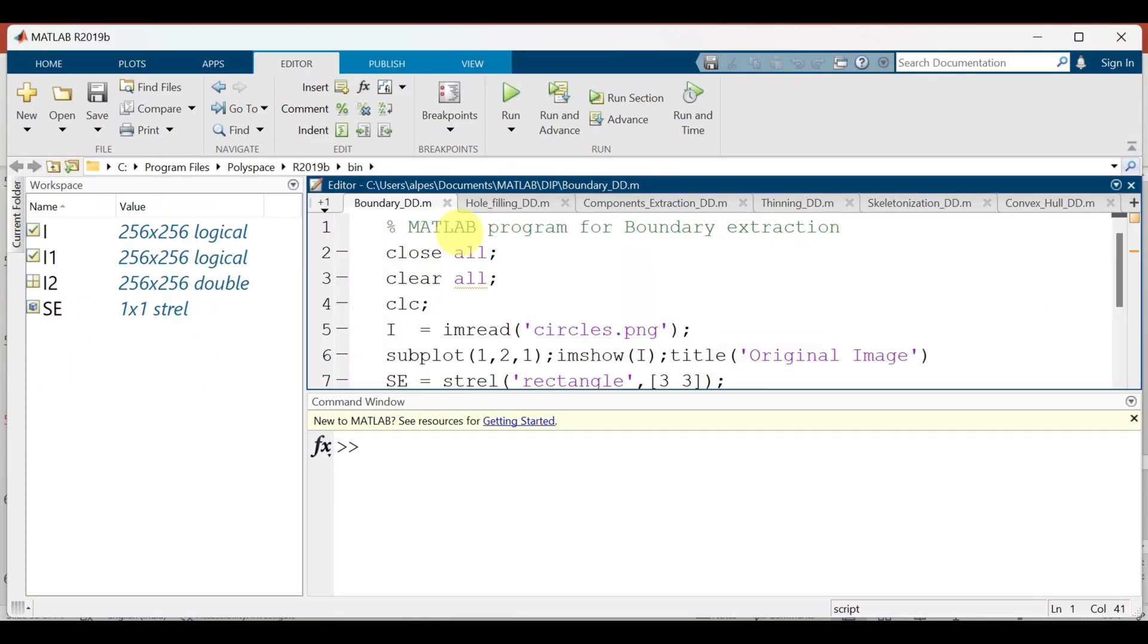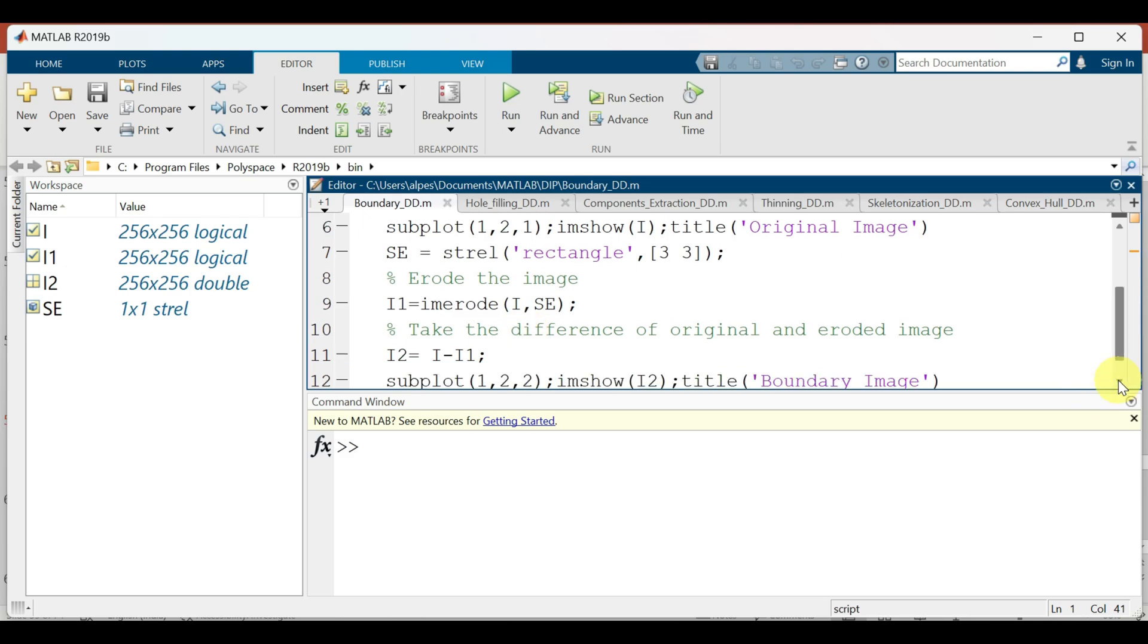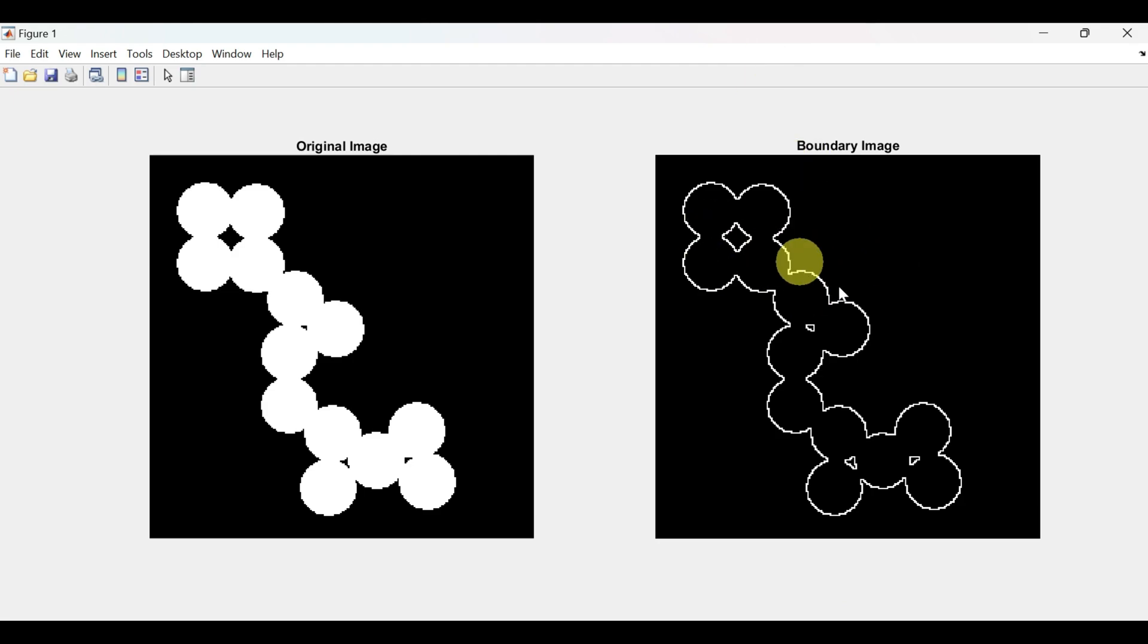Let us implement in MATLAB. This is the MATLAB program for boundary extraction. We are reading the image circles and first eroding it and then taking the difference from the original image. Let us run and see the output. So we can see here that the boundary is extracted.